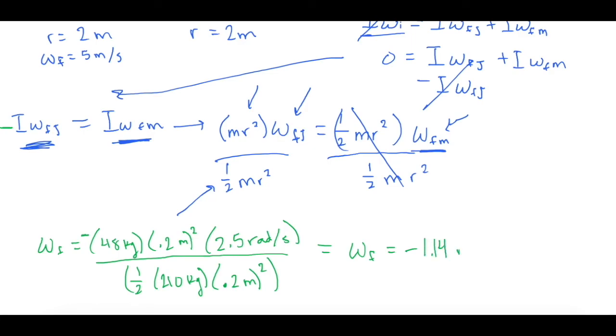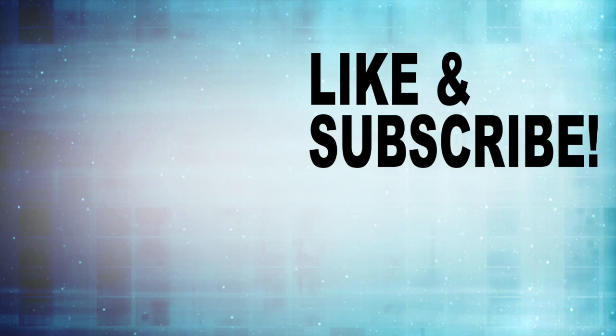And that is in radians per second, because that is the units that we put in. Okay, so now going back to what we were talking about at the beginning, Joey, we assumed he was running in the positive direction. The merry-go-round will spin underneath him in the opposite direction, so in the negative direction, and it is spinning at a speed of 1.14 radians per second.